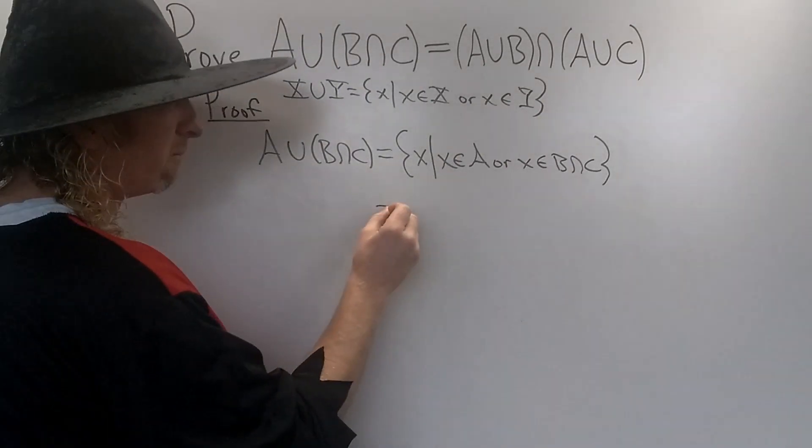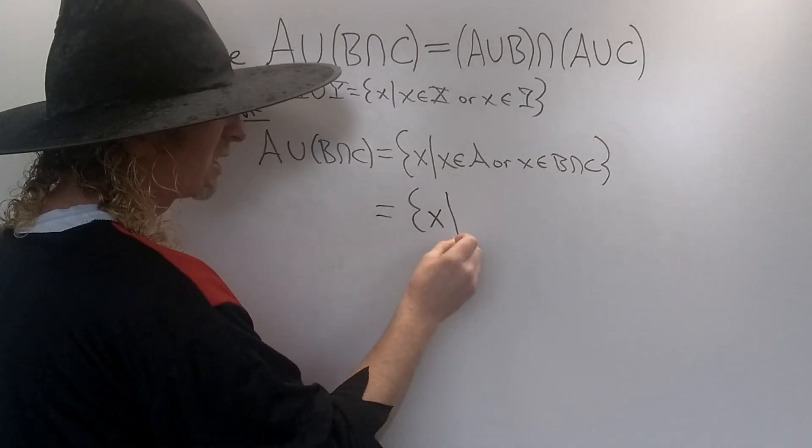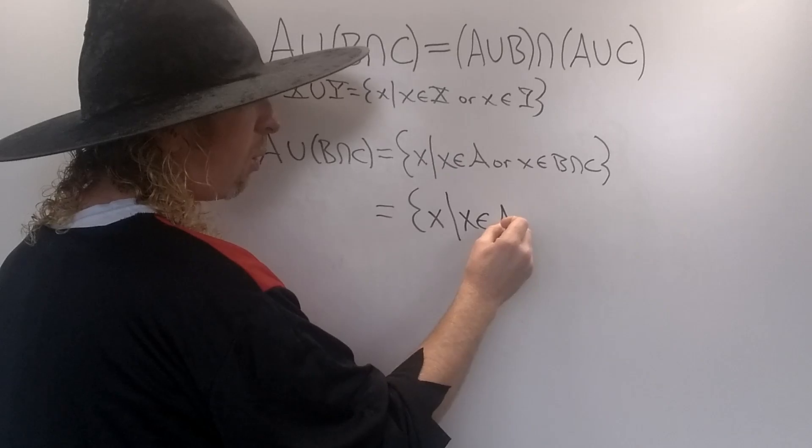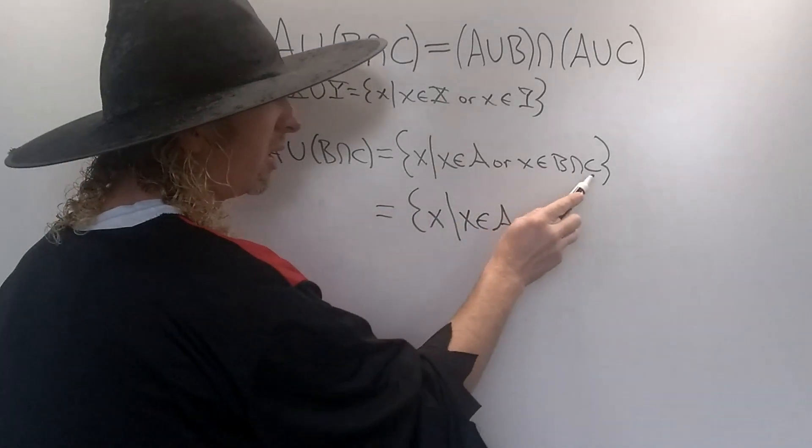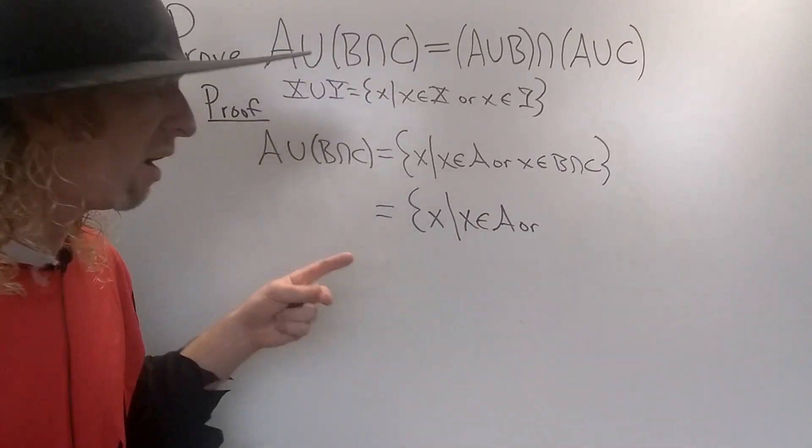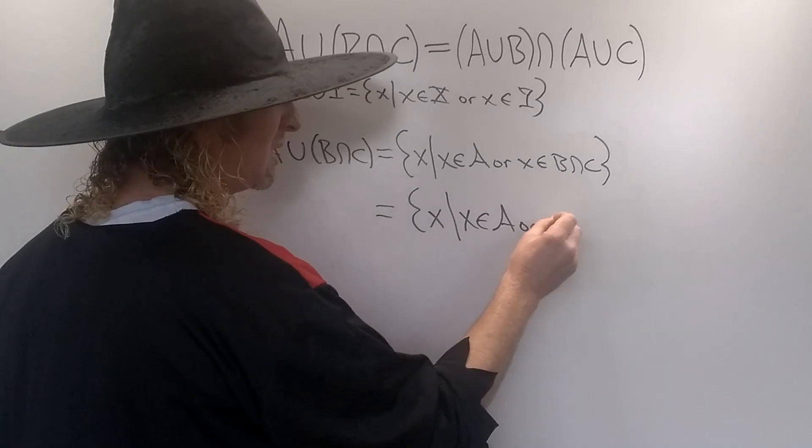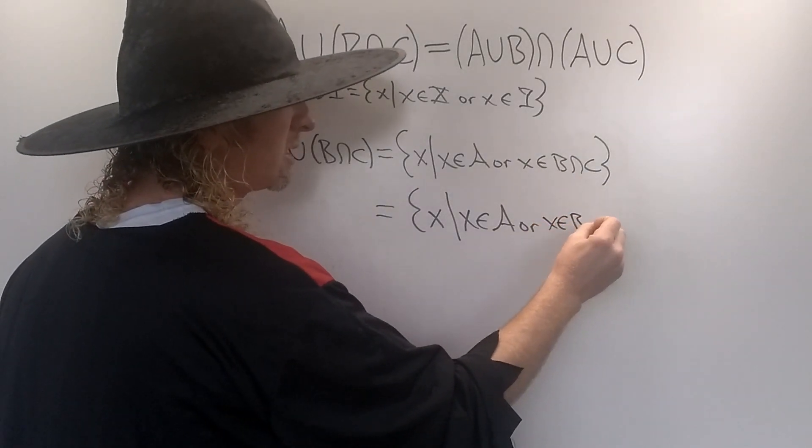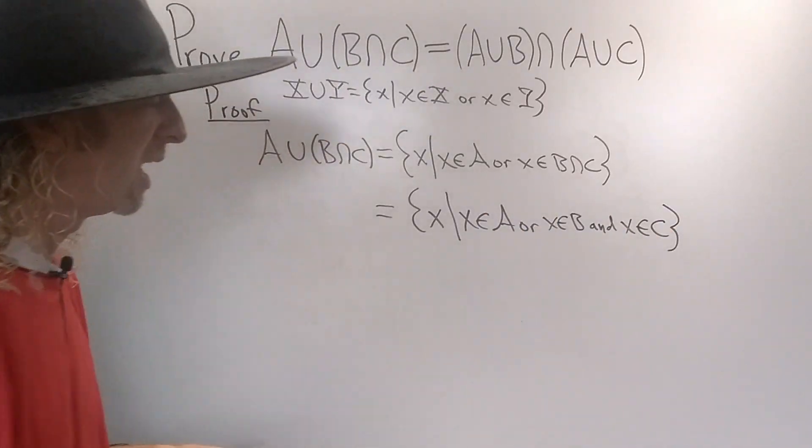So this is the set of all x such that x is in A or... The only thing you can do - one-way proof - is use the definition of intersection. For it to be an intersection means it's in both. So it means that x is in B and x is in C.